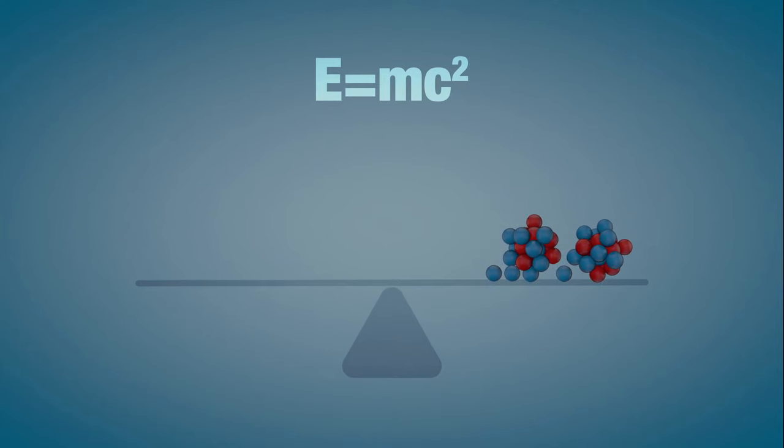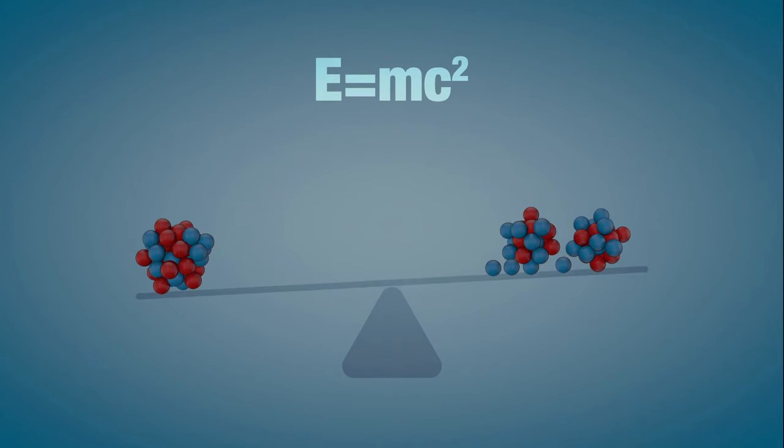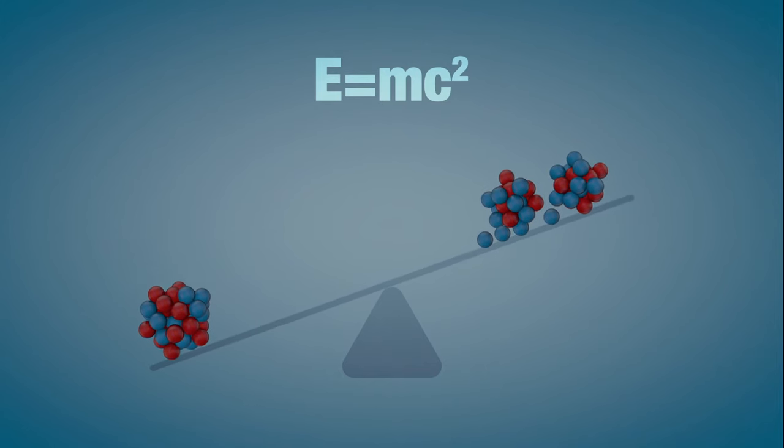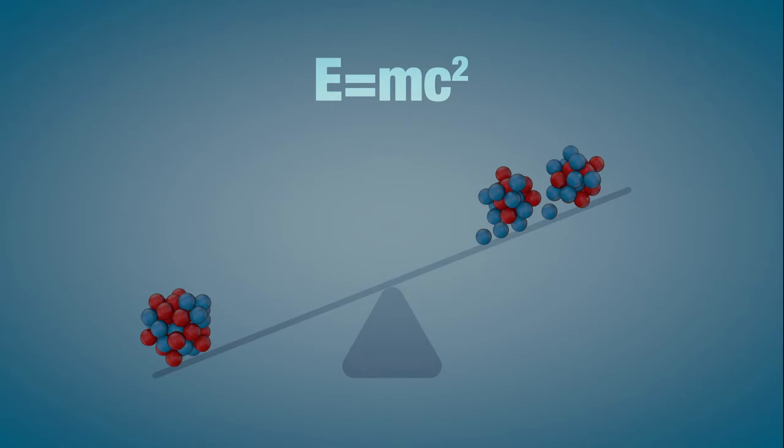When you add the weight of the leftover products after fission, they actually weigh less than the original uranium atom. That is, some of the mass seems to have disappeared. The great thing about nuclear fission is that a very small mass is transformed into a very large amount of energy.